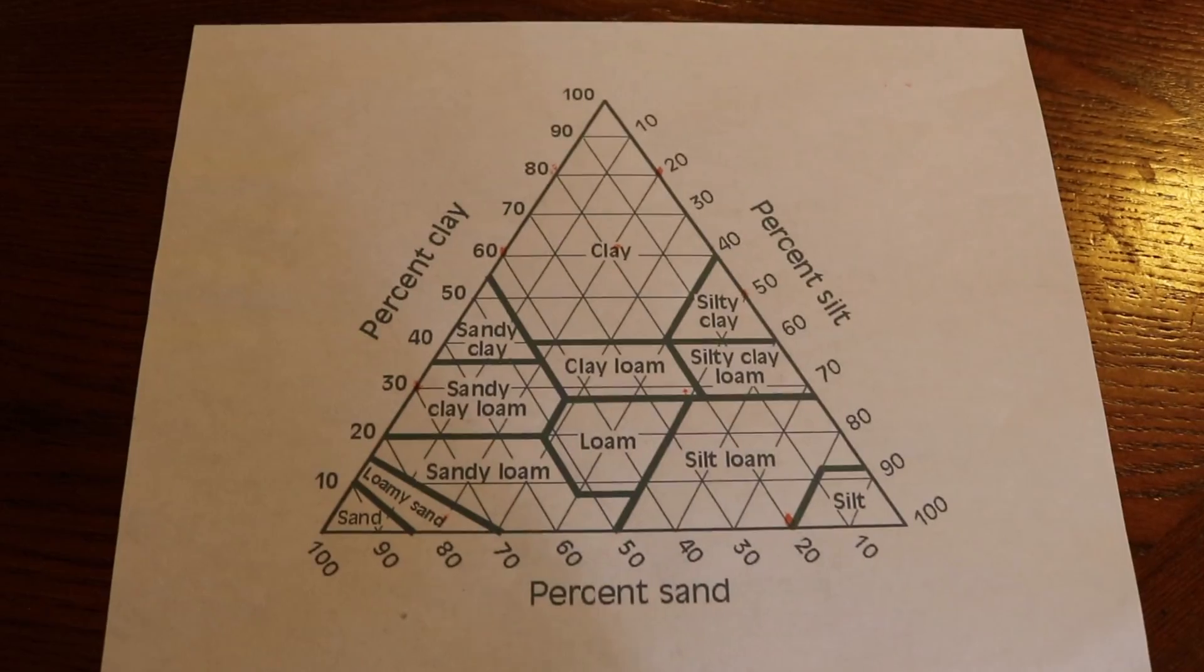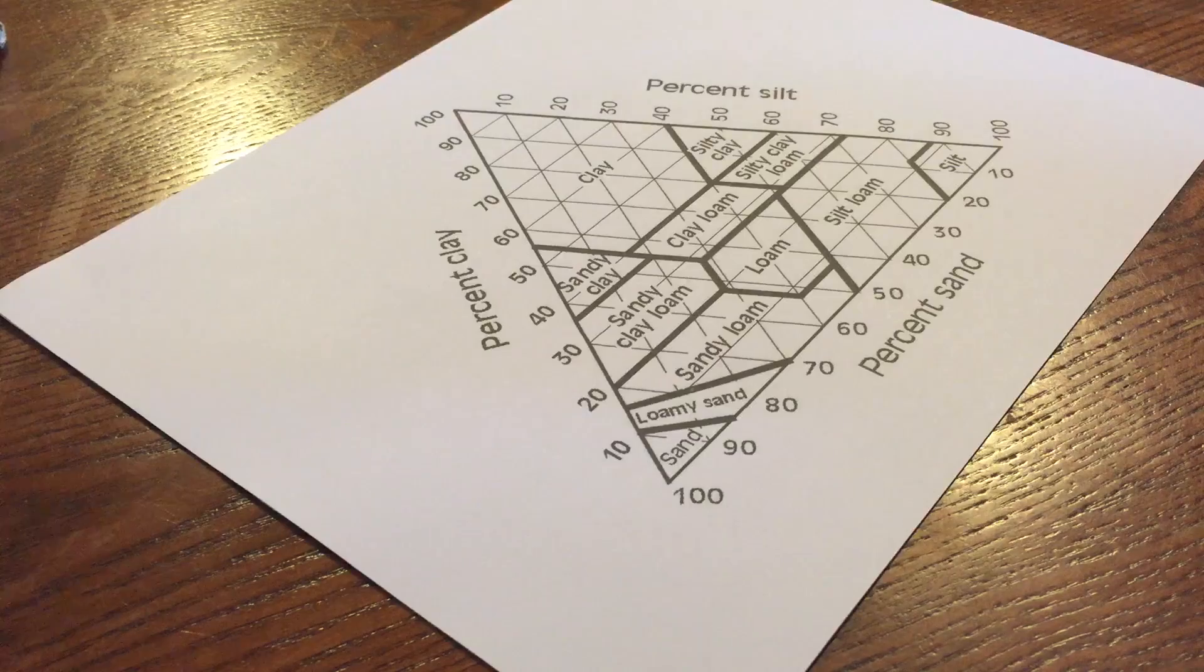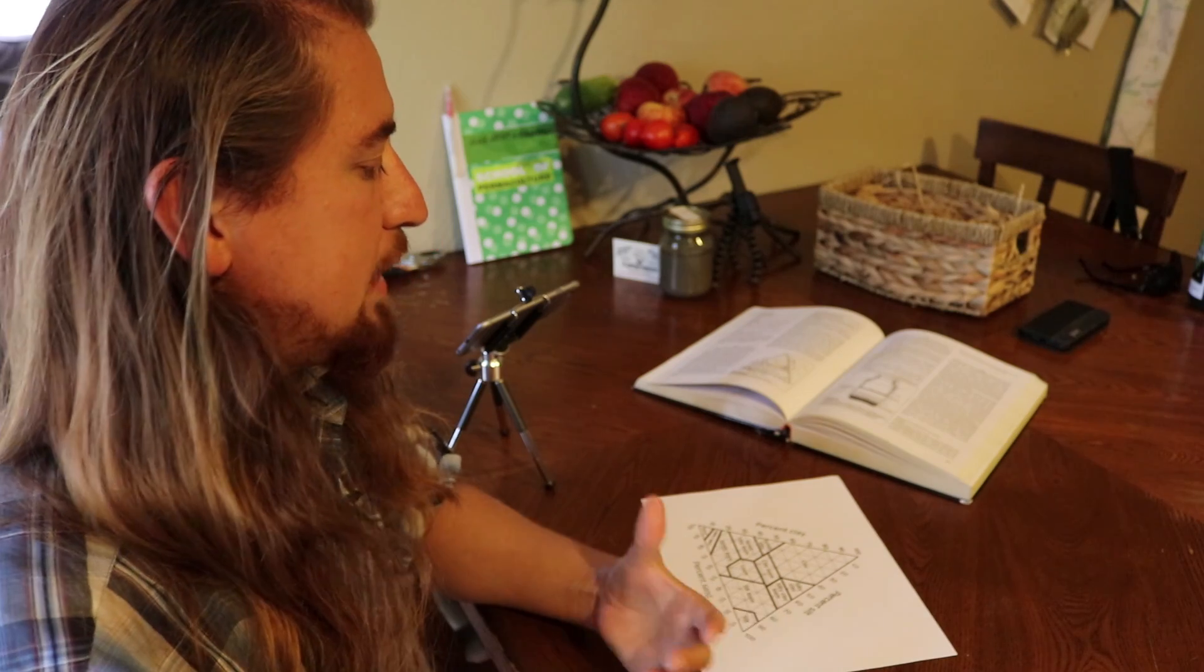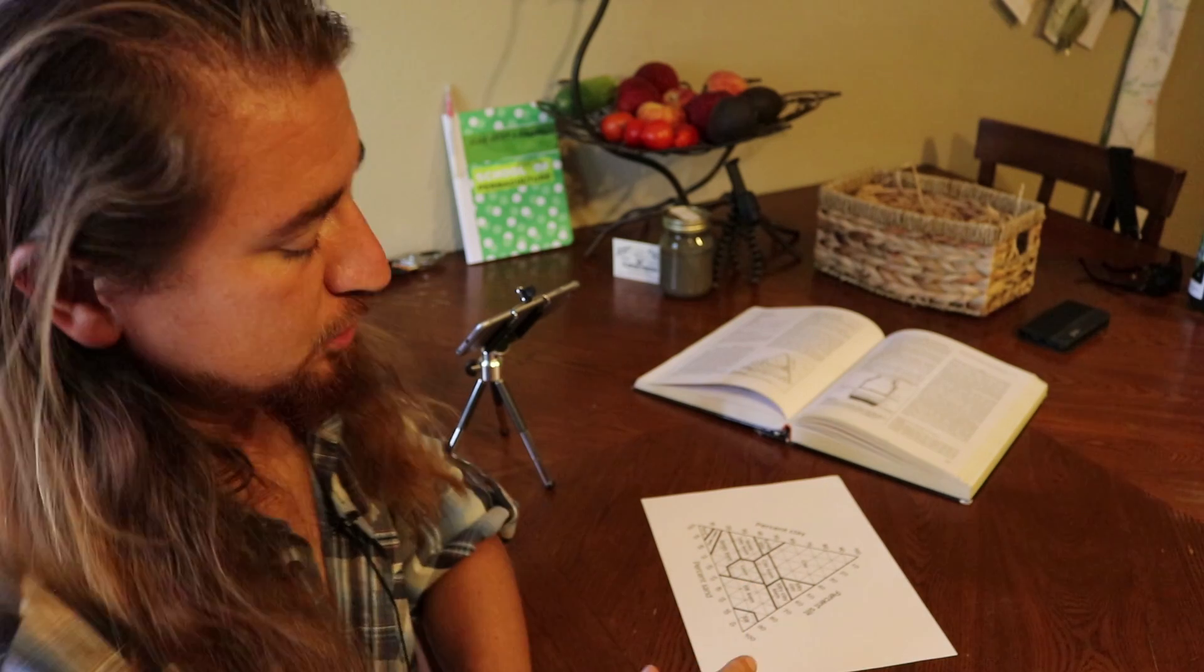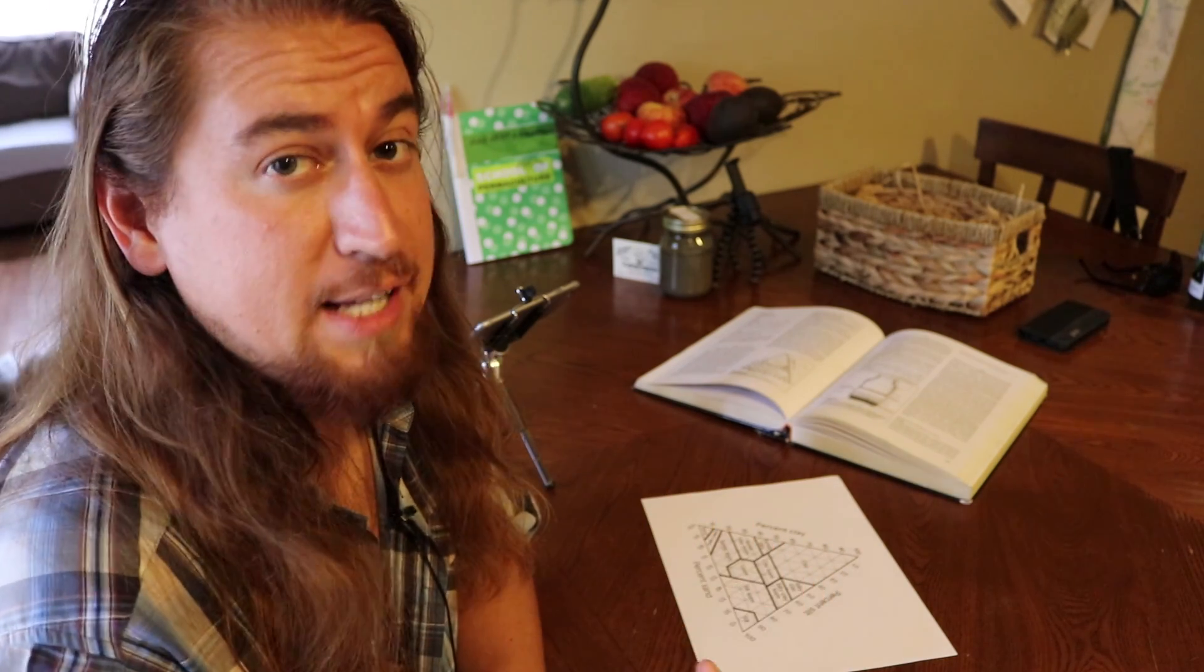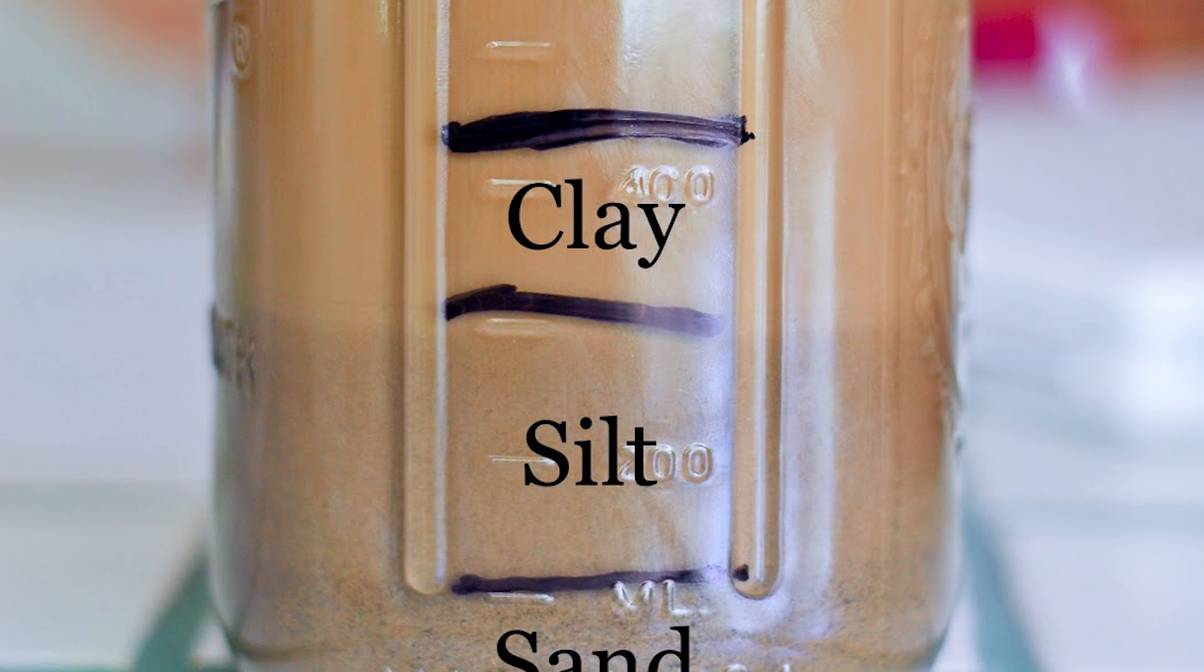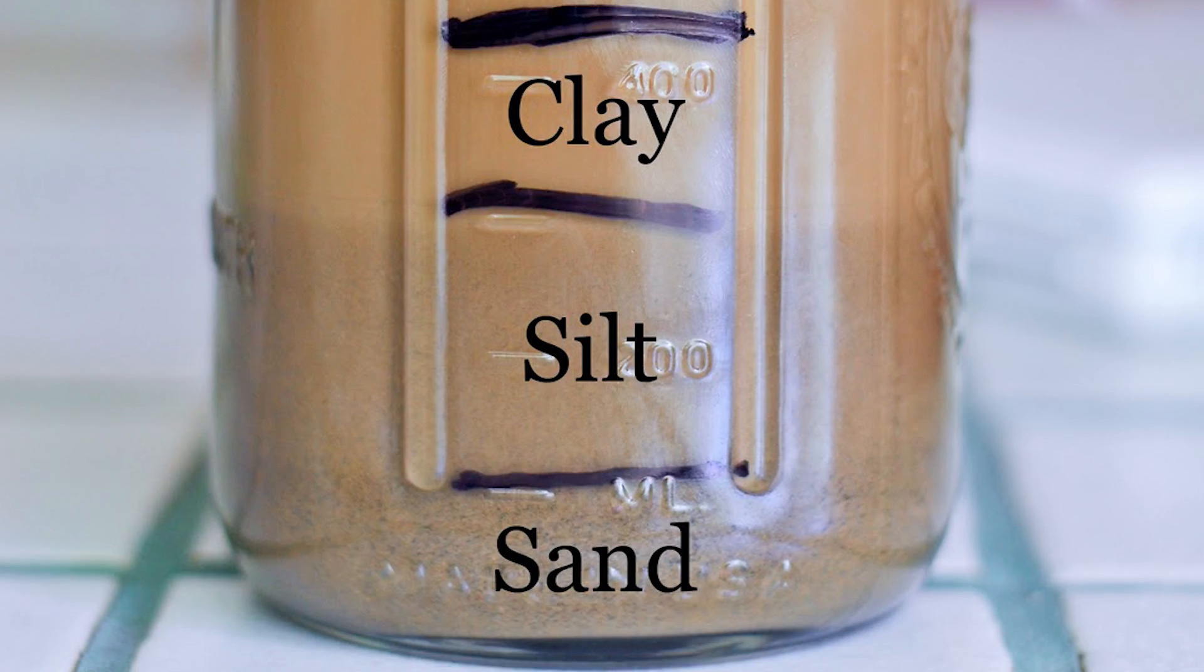What in the world is a soil texture triangle? Well, it is not a triangle to be concerned about—it's pretty simple to understand. The reason it is there is so we can take something simple like that mason jar test that we're always doing, get our percentages of sand, silt, and clay, and use those percentages to properly identify them into a category.